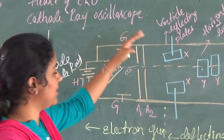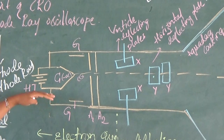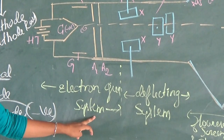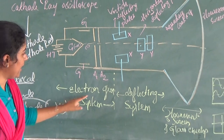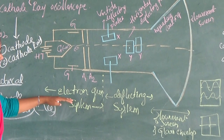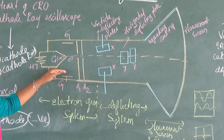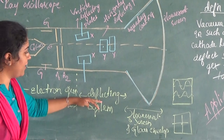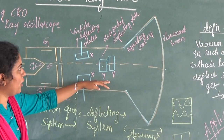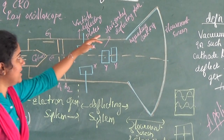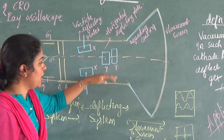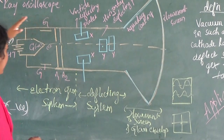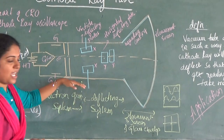This is the circuit diagram of the cathode ray tube. It has mainly three parts. The first part is the electron gun system — from here to here — which contains the cathode and anode grid. The second part is the deflecting system, which has two sets of deflecting plates: one is the vertical deflecting plate and the other is the horizontal deflecting plate. The third part is the fluorescent screen and glass envelope, which is maintained at high vacuum.